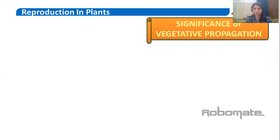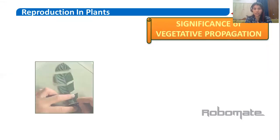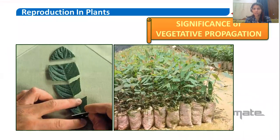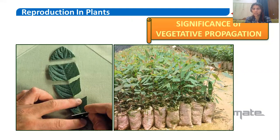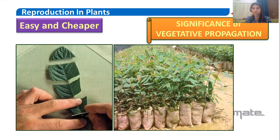The very first point of significance of vegetative propagation: in vegetative propagation we have various methods — cutting, budding, and grafting. In all these methods, all we need is a plant part and some soil, which is easily available. Other than that, we just need a pot or a poly bag. So this method is very cheap and easy.